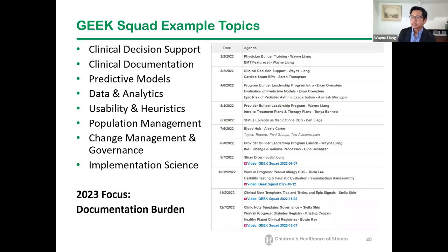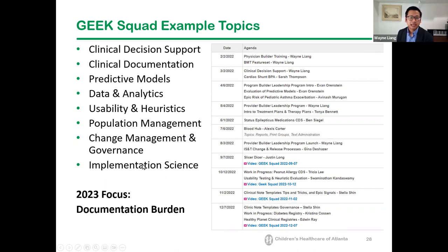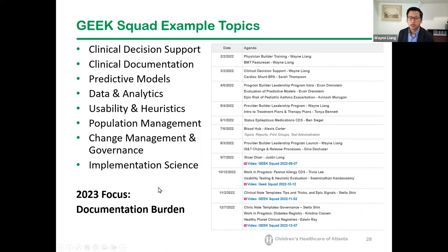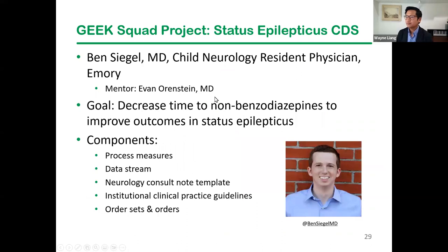Here are examples of topics we covered in the last year. It's a formalized curriculum covering topics important for all our builders to know. Our 2023 focus was documentation burden — there's an opportunity to revise notes with new E/M changes, and with AMU 25-to-5 emphasizing reducing documentation burden, we made that our year goal. Our 2023 calendar includes guest speakers from other institutions and education on how to reduce documentation using existing technology, not necessarily future technology we don't yet have access to.